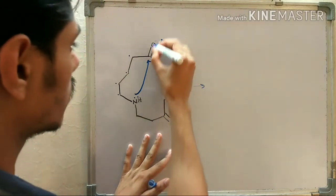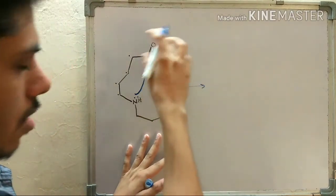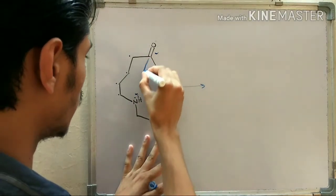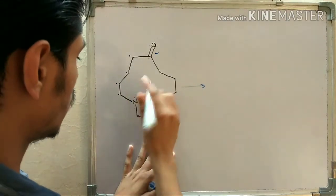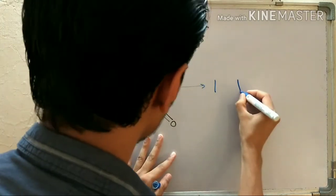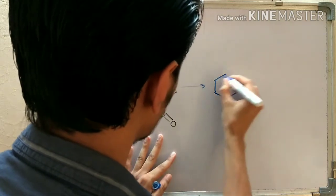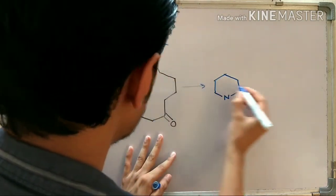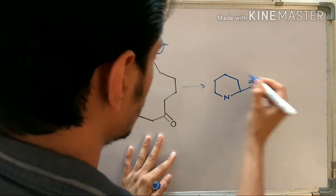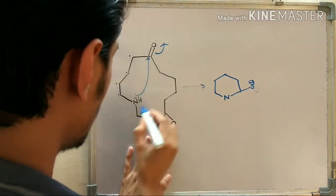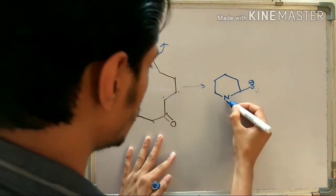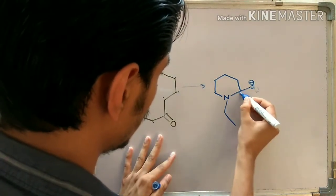So first, the nitrogen attacks the free carbonyl group and a bond forms here, giving a six-membered ring. Now you can see you also have a nine-membered outer ring — one, two, three, four, five, six, seven, eight, nine — and there is another carbonyl group remaining in the molecule at the one, two, three position.